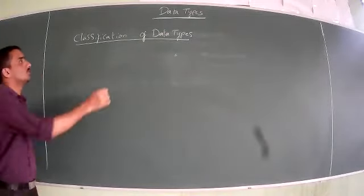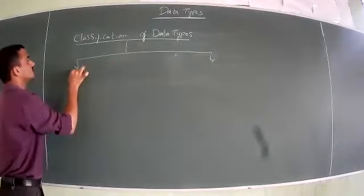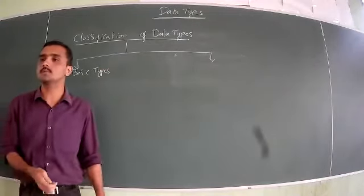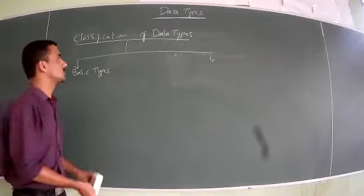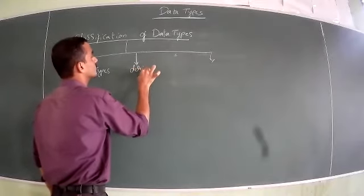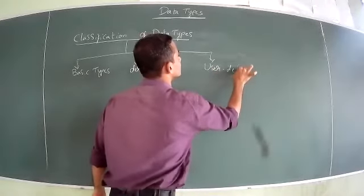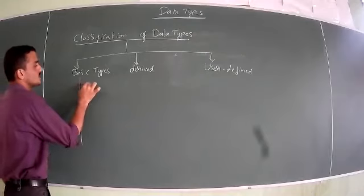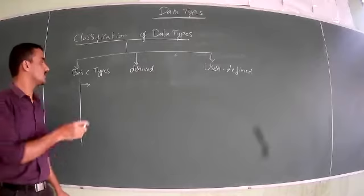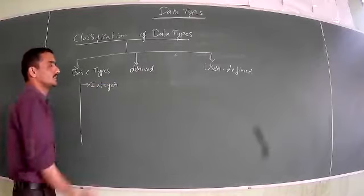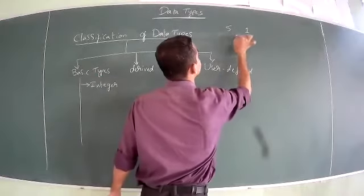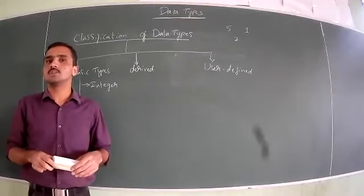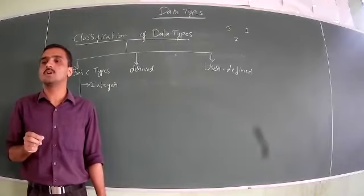Now we can see the classification. The first classification is 'basic data type', or we can say 'basic type'. The second category is 'derived type'. The third is 'user-defined type'. In case of basic types, when you type digits or integers from the keyboard, those come under the type called integer. Without any decimal point — like 1, 2, or 5 — these are integers. You also need to know about keywords: keywords are words which have predefined meaning in C++.